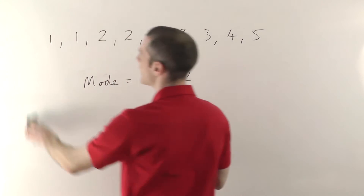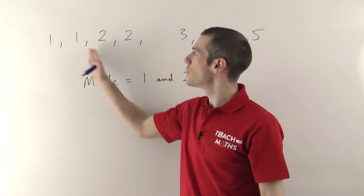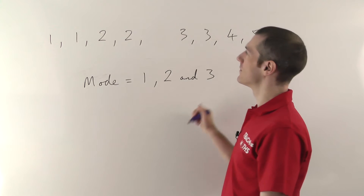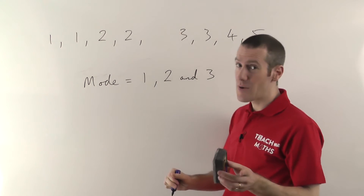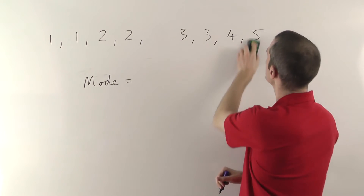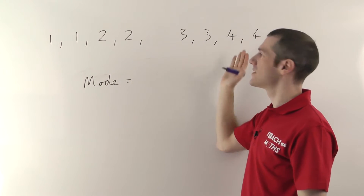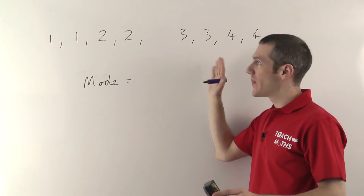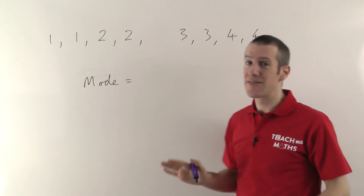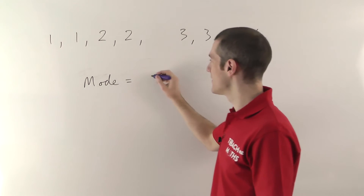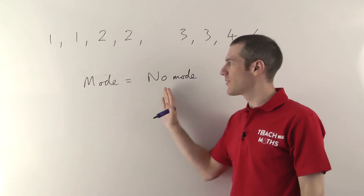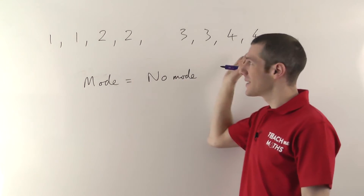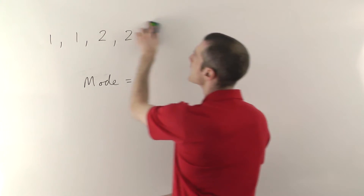If we had two ones, two twos, two threes, a four and a five, the mode is one, two and three — all three tie for first place. However, be careful: if all numbers in the list are completely tied — say two ones, two twos, two threes and two fours — there is no mode. Write 'no mode.' Don't write zero, because zero would mean there are more zeros in the list than any other number.